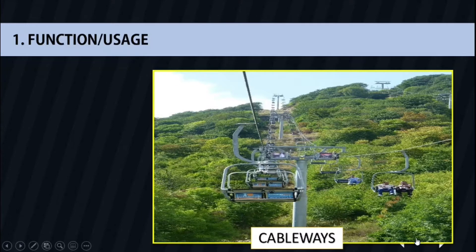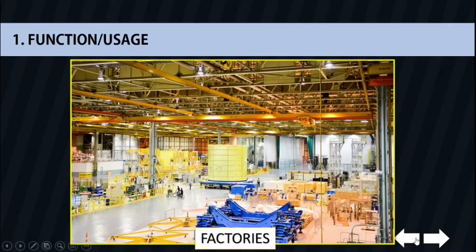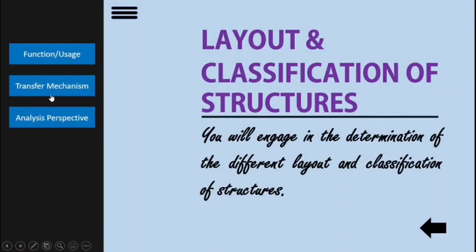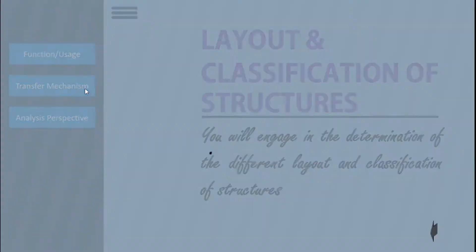Lastly, factories. Factories are a building or set of buildings which facilitate manufacturing. That is our first category: structures based on functions or usage. Now let's go to the next one: structures based on transfer mechanism.